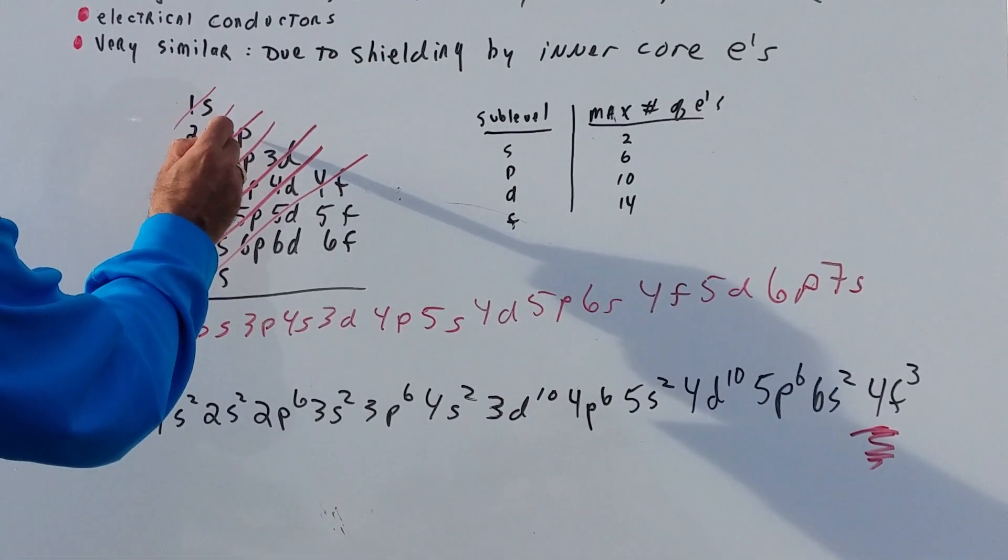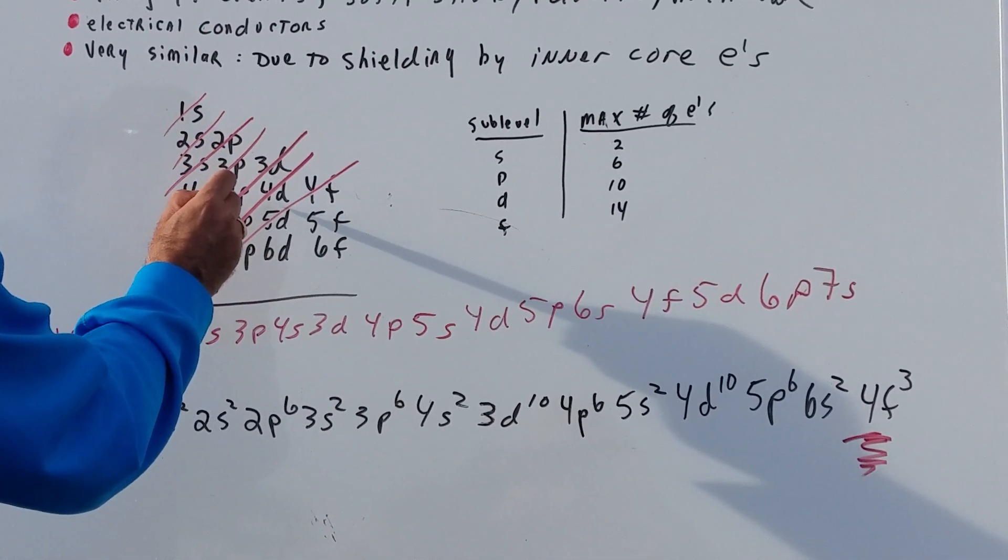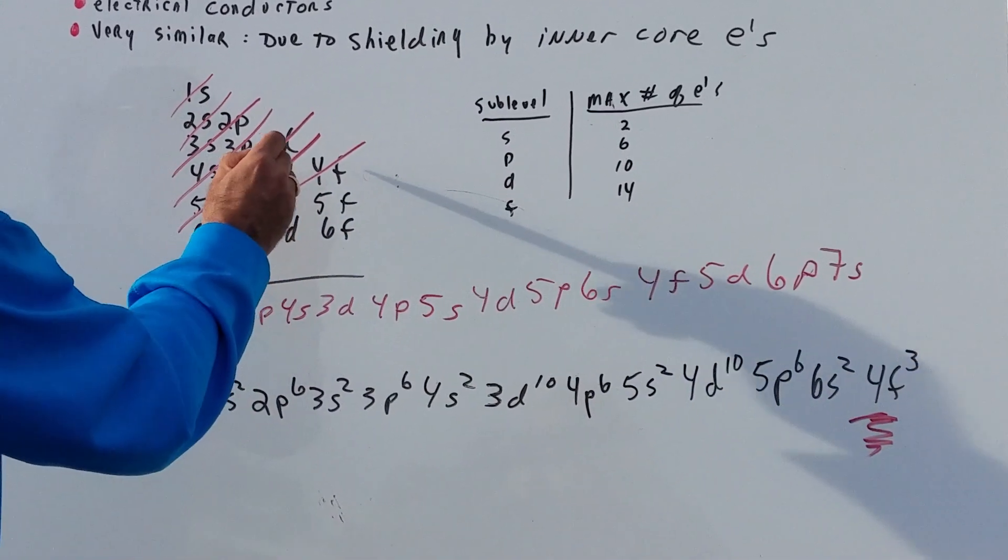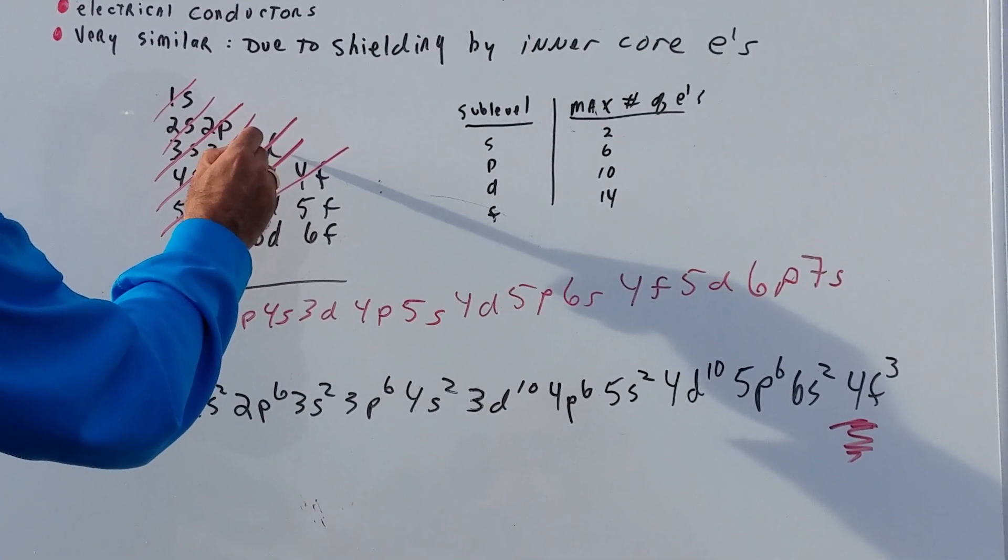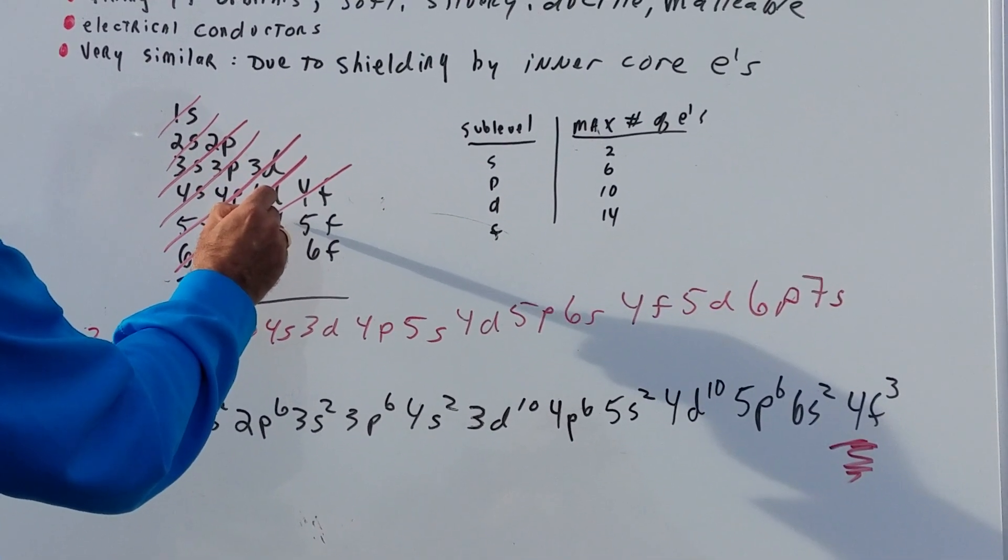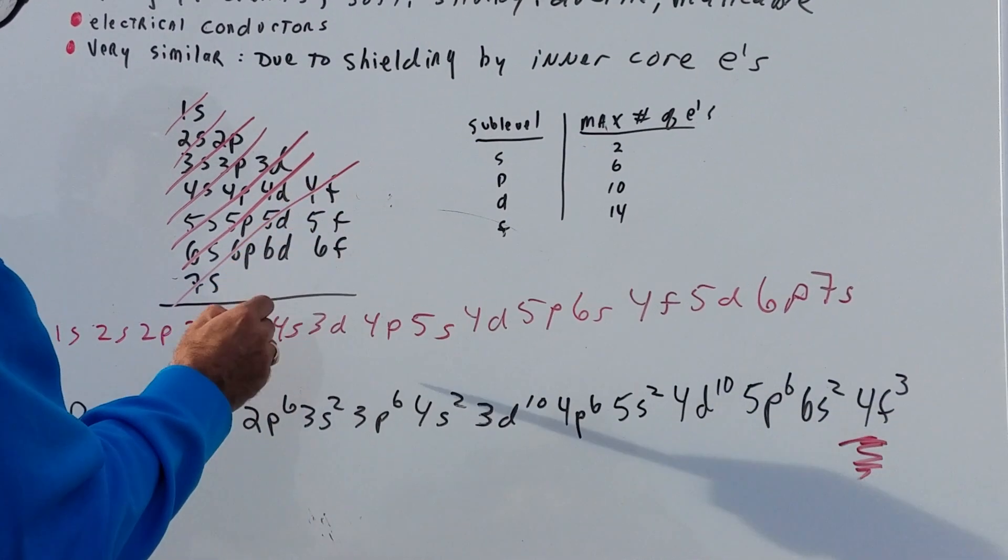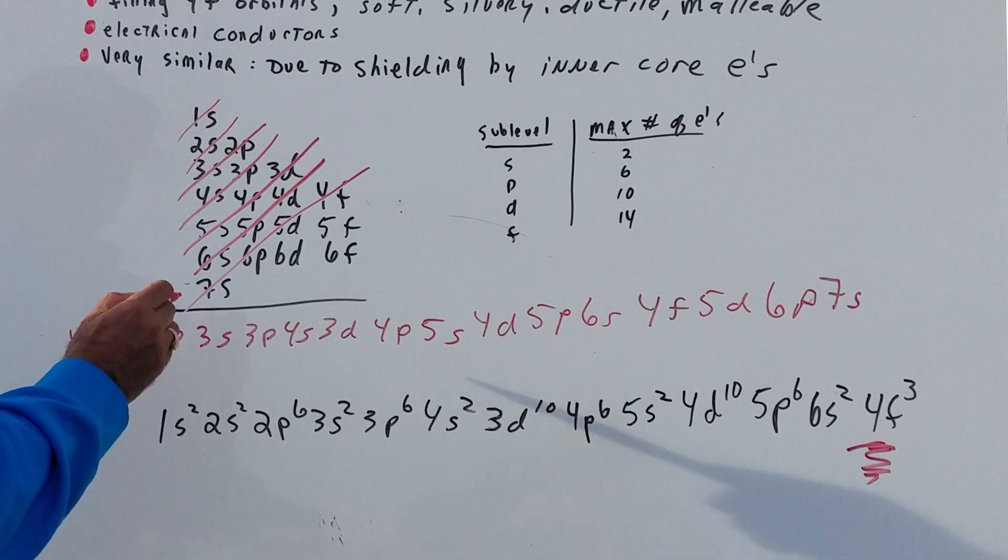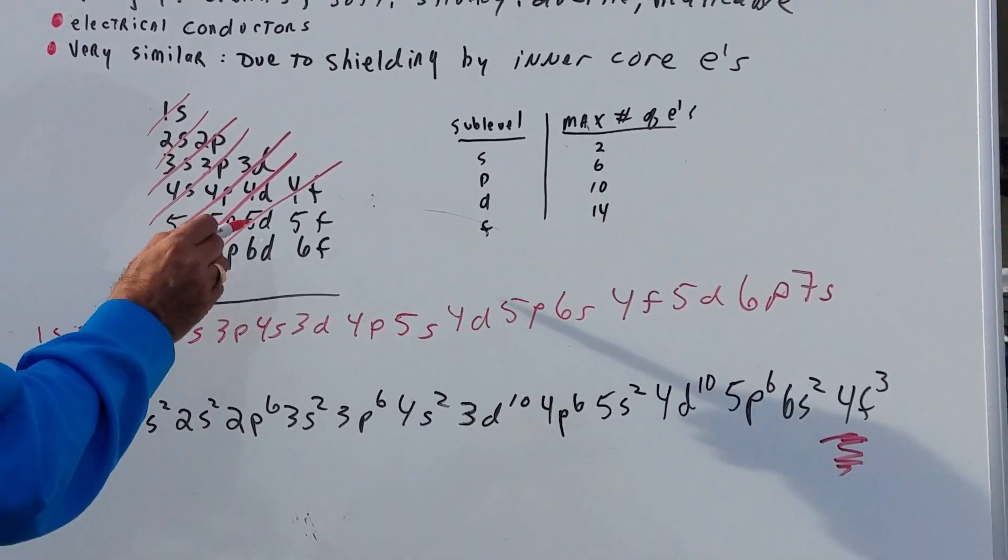Then you're gonna go to the next column and just write 2p, 3p, 4p, 5p, 6p. We can stop it at 6. And then over here we're gonna go 3d, 4d, 5d, 6d. And we stop it there. And then this column, 4f, 5f, 6f. What I want you to do is I want you to practice that.